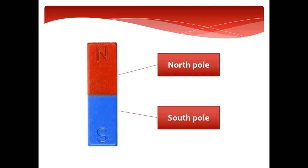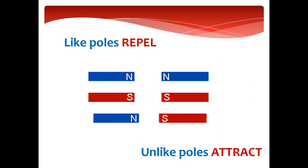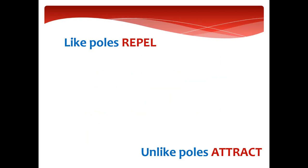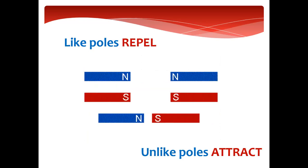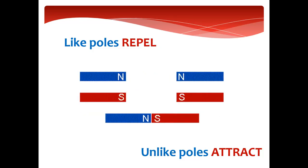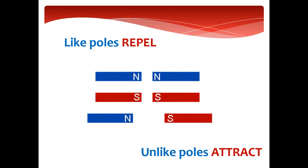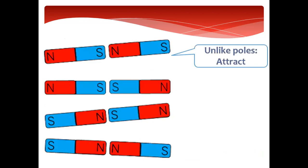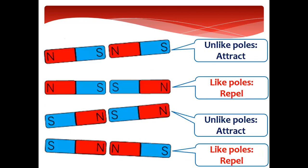You can test the poles by bringing two round magnets. If they are having like poles — like sides — they will repel. If they are having unlike poles, they will be attracted. Like poles means either north beside north or south beside south — unlike poles attract means north beside south. So like poles will be repelled, they will move away from each other, but unlike poles will be attracted and stuck to each other.